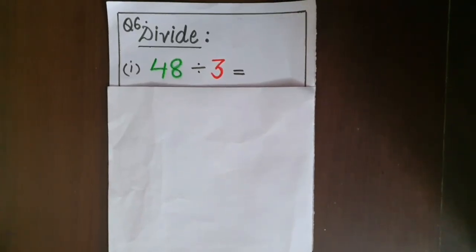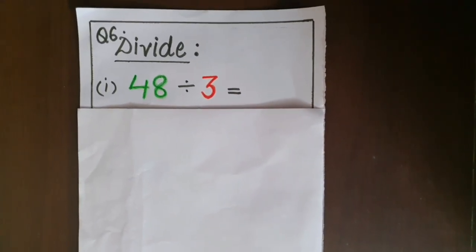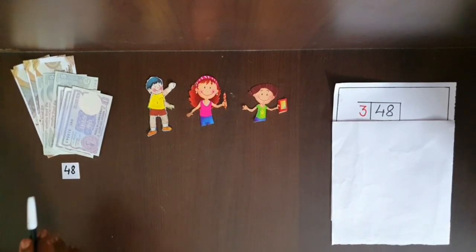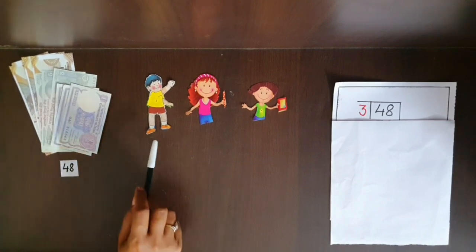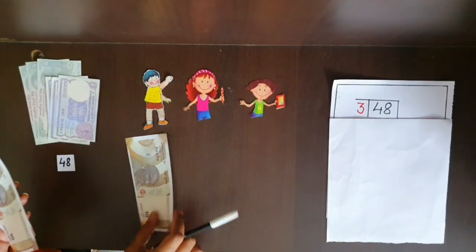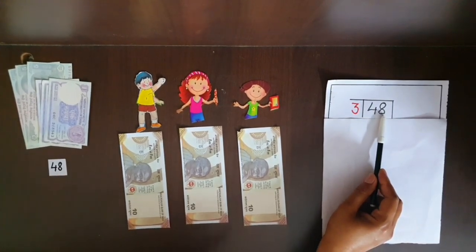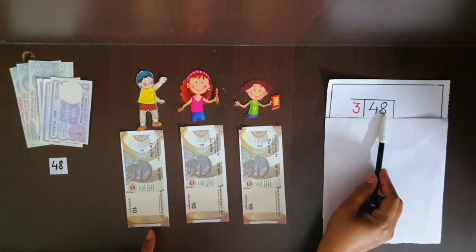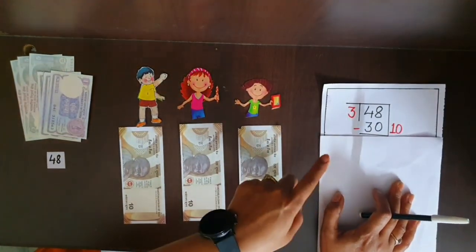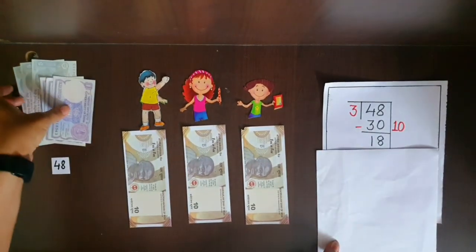Now let's do question six — divide: first part, 48 divided by 3. Suppose we have 48 rupees and we have to distribute them among three students. First, I am going to give 10 rupees each — each student got 10 rupees. So out of 48, we have distributed 10 plus 10 plus 10, that is 30 rupees, or ten threes are 30. By subtracting 30 from 48, we are left with 18 rupees.